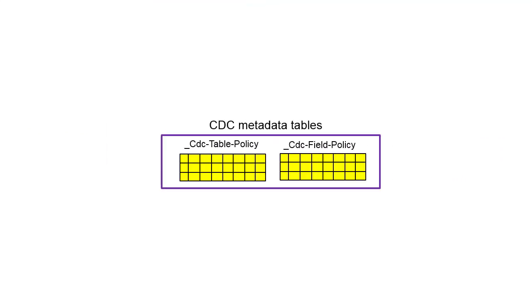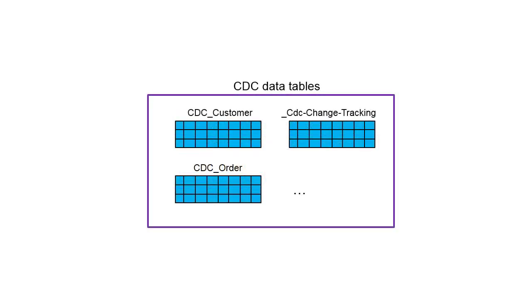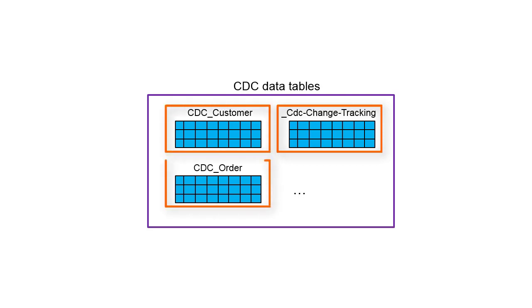CDC includes two metadata tables that are created in the source database when you enable CDC for the database. These tables contain information about CDC policies for source tables and their associated fields. CDC also includes data tables, a tracking table that maintains a record of all CDC activities and individual change tables.